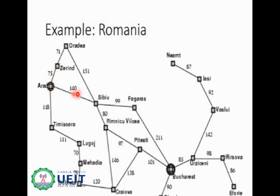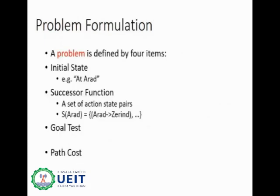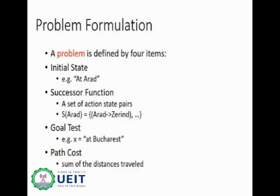From Arad, by taking a single action, we can go to Sibiu — Sibiu becomes a successor of Arad. From Arad, we can also move to Timisoara, so Timisoara also becomes a successor of Arad. Goal test tells us about the goal; for the Romania map, the goal is to reach Bucharest — the final goal state. The path cost function determines the cost of each path and is the performance measure. For example, it can be the sum of distances traveled or time, since for the agent trying to reach Bucharest, time is essential.